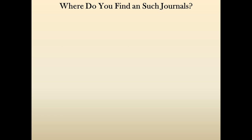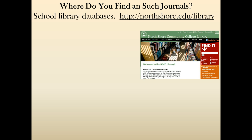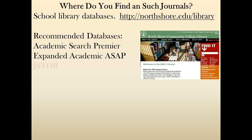So where do you find such journals? The best place, and the place I'll tell you to go time and again, is our school library. The North Shore Community College Library has a lot of databases with access to probably tens of thousands of academic journals. You can try Google Scholar, but the problem is it's hit or miss — you may not find an article, and you're likely going to have to pay for it. Everything in the school library is free. I recommend Academic Search Premier, Expanded Academic ASAP, and JSTOR — JSTOR in particular helped me get through grad school.